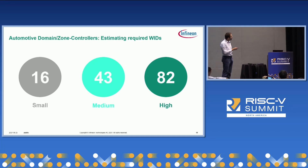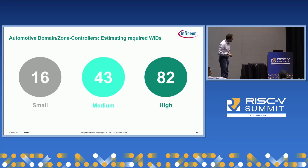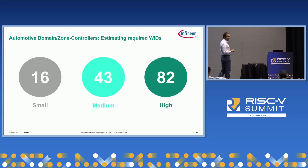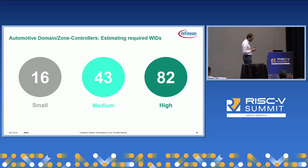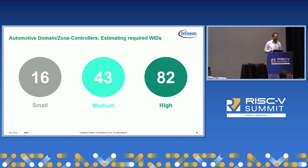Looking at how the number scales and calculating the upper bound of separable partitions — accounting for privilege level, number of virtual machines, and the ANMs — for a small configuration we would need 16 IDs, for a larger configuration 43 IDs, and for a high configuration 82 IDs. This exceeds the current limit of the WorldGuard specification for XLEN=32, where we see a limit of 32 IDs.